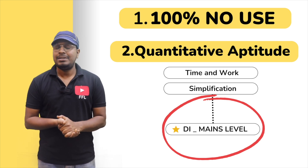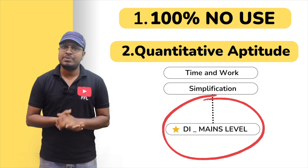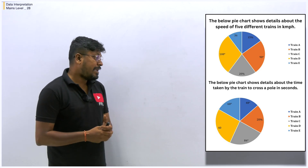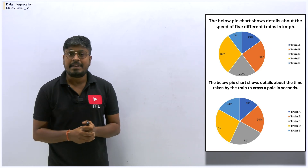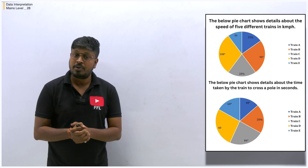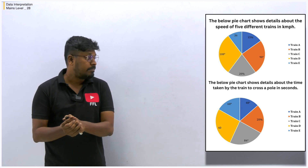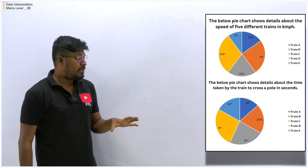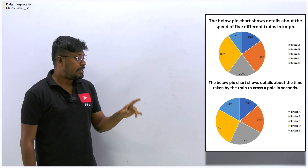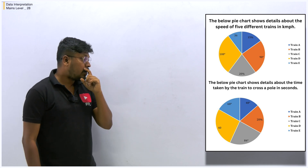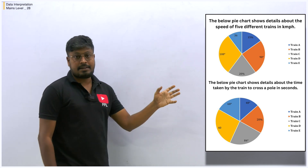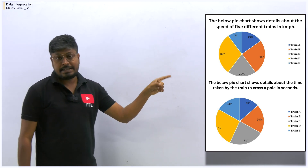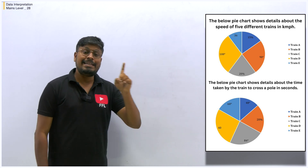Now getting into the 28th data interpretation for mains level competitive exam. In this 28th DI we will be solving a problem based on the concept of trains. They have given two pie charts — so I hope you have taken the test first.